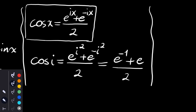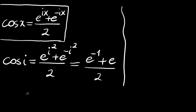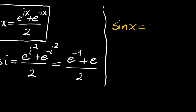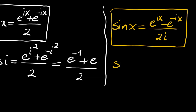Similarly, we can find sin(i). By subtracting the two equations, we get sin x equals e to the ix minus e to the negative ix, divided by 2i. Substituting x equal to i, sin(i) equals e to the i squared minus e to the negative i squared, divided by 2i, which gives e to the negative first power minus e to the first power, divided by 2i.